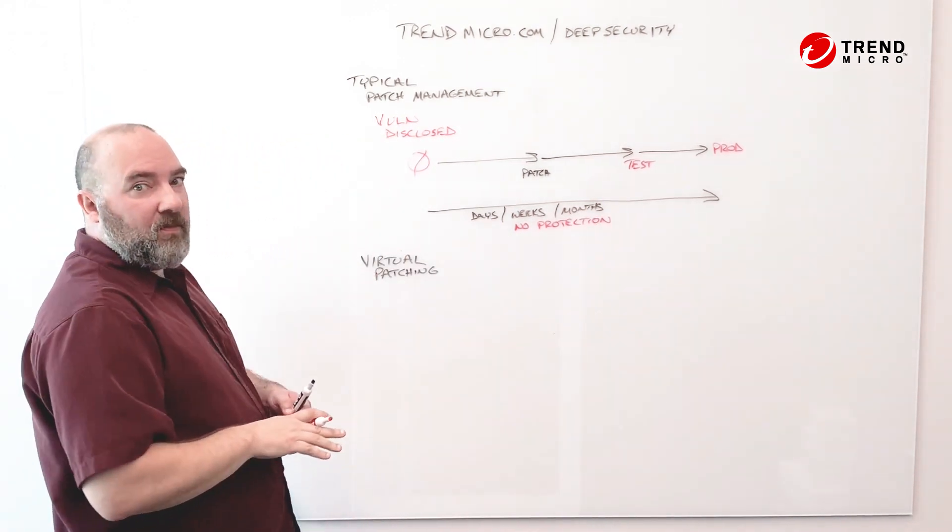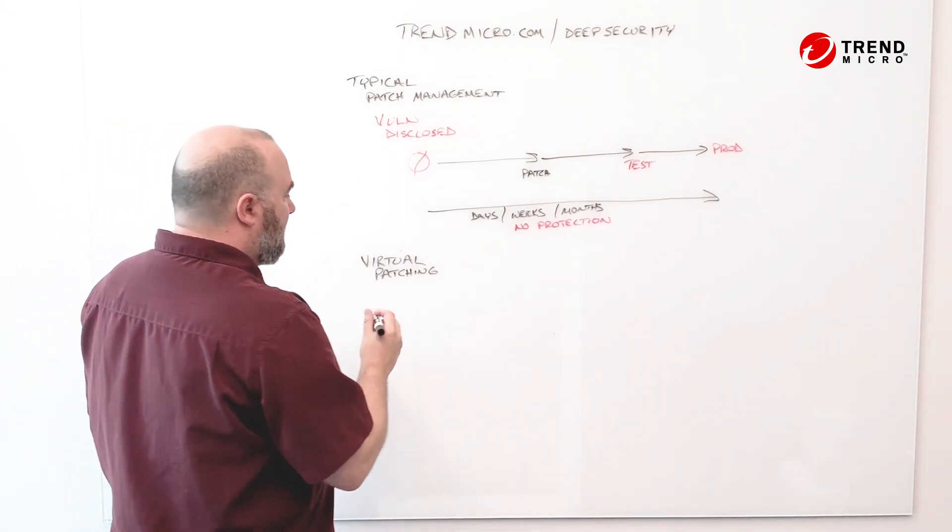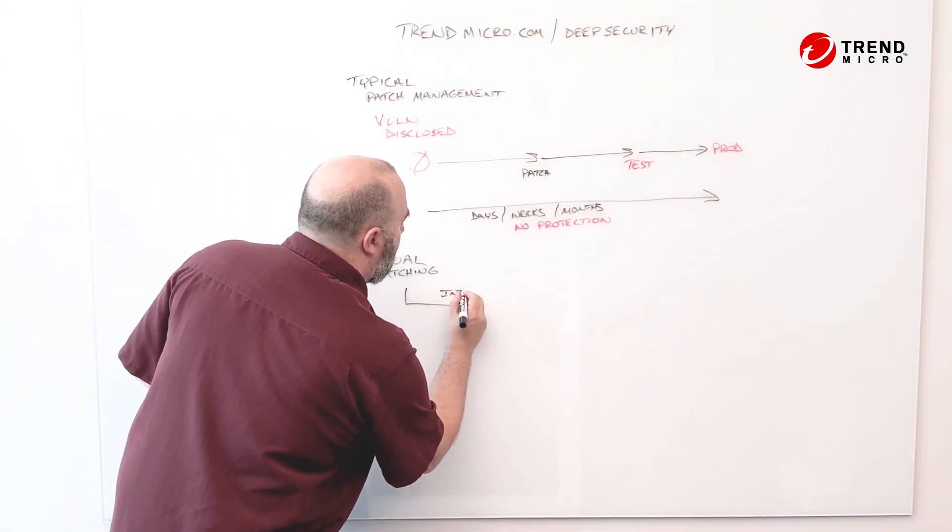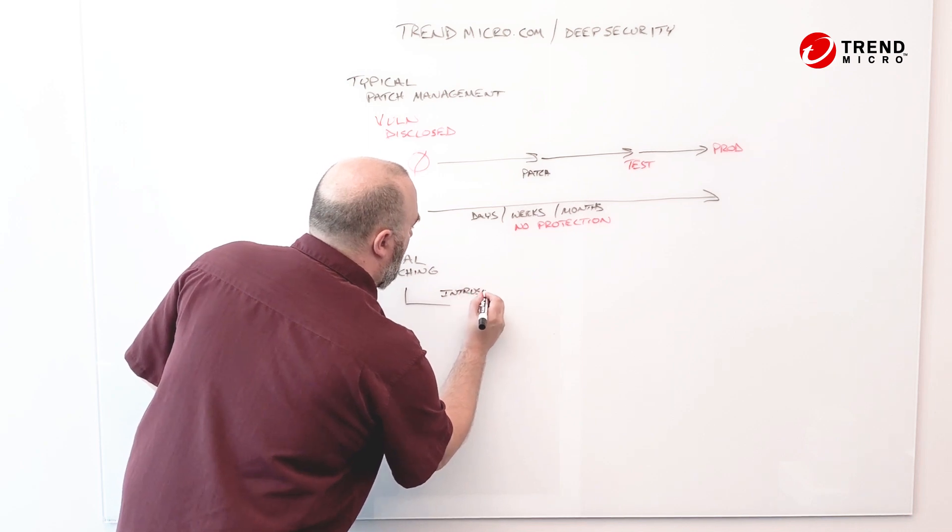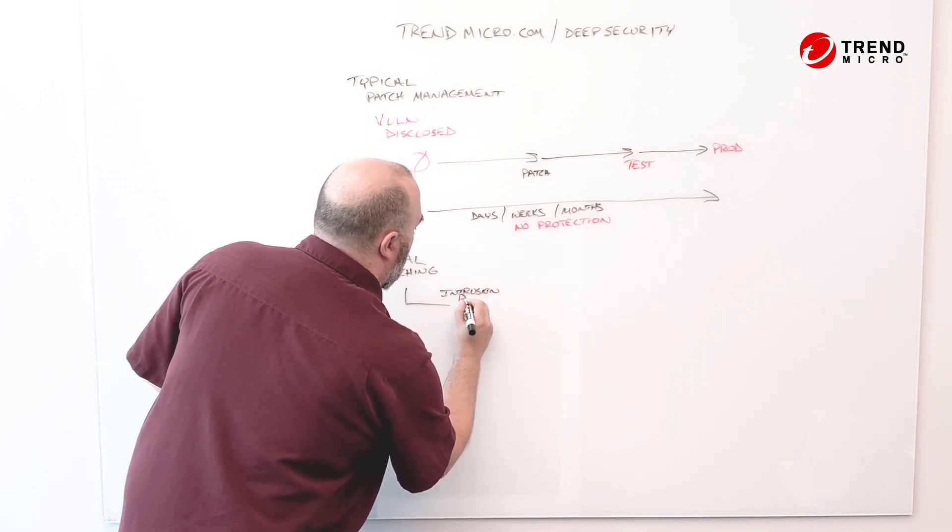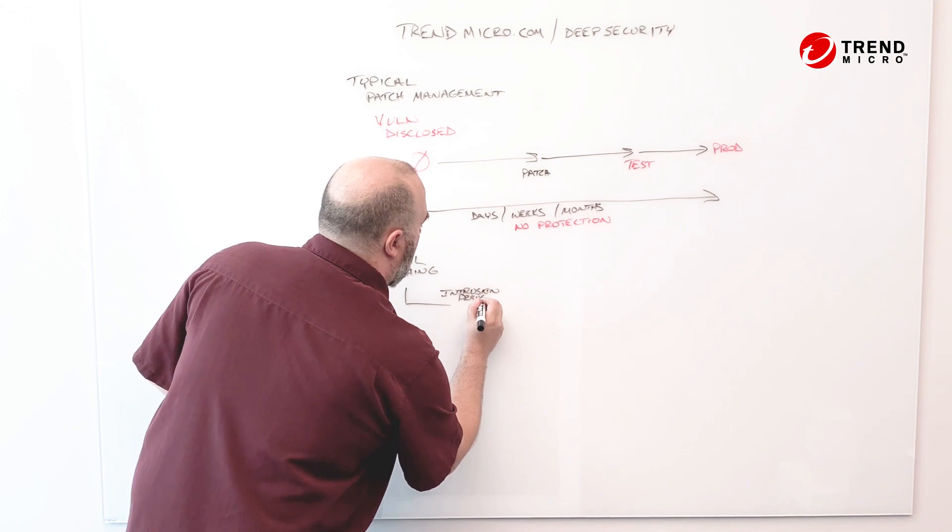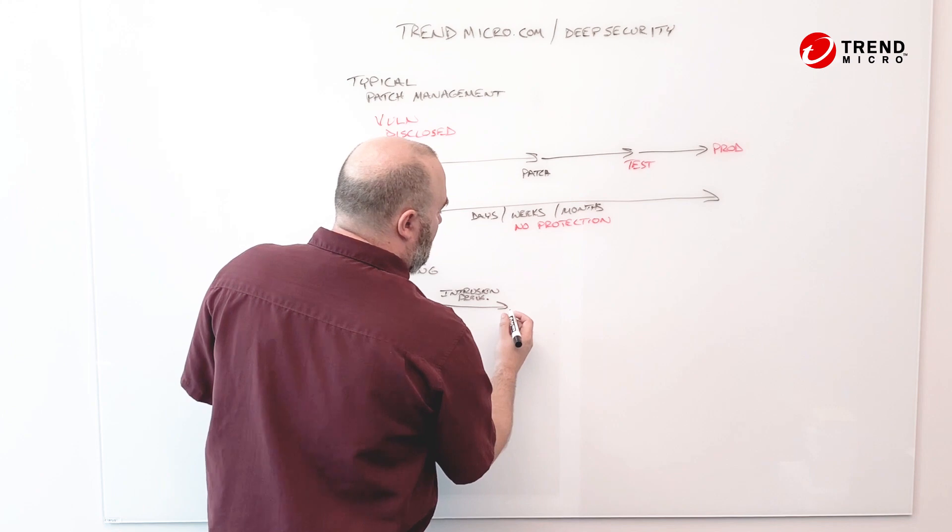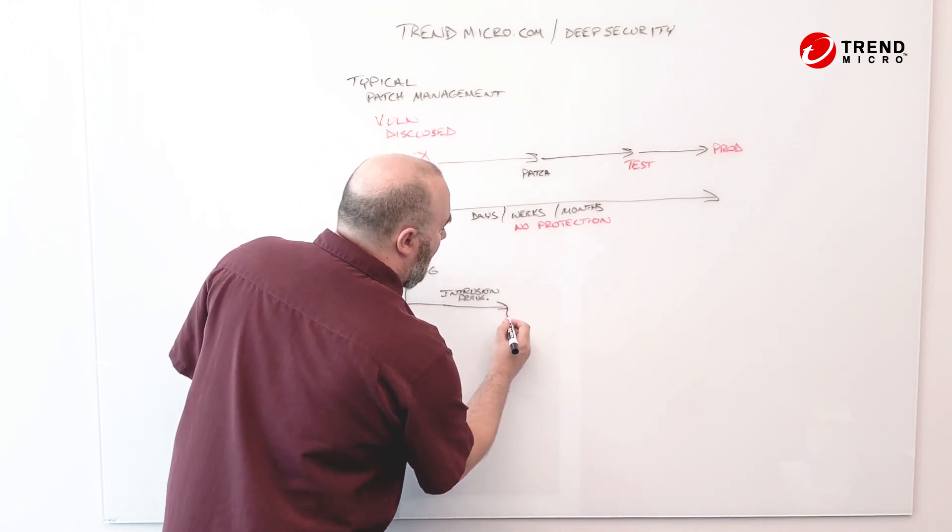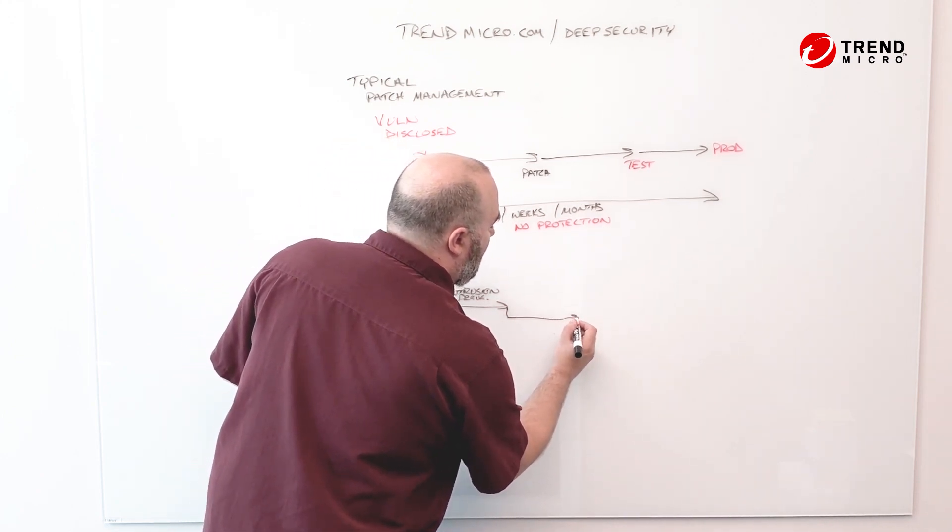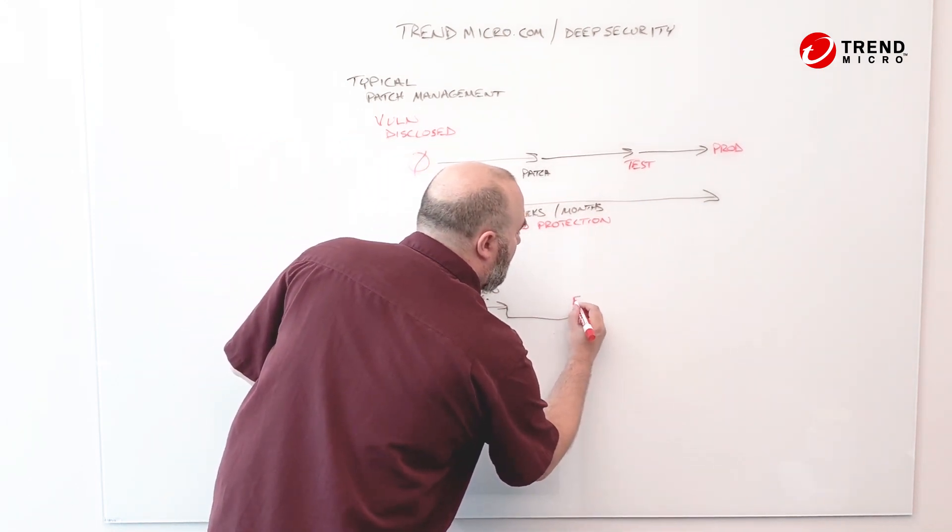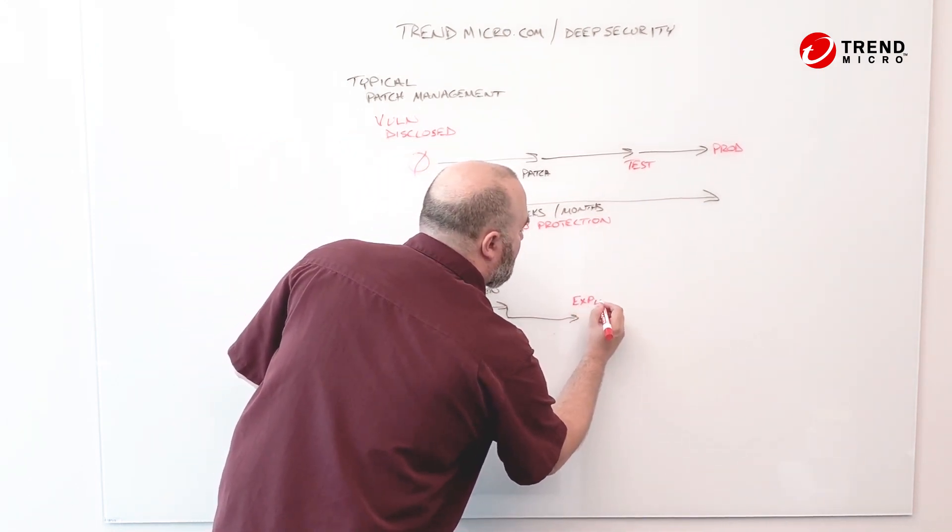So what does virtual patching do? Virtual patching uses intrusion prevention to actually apply a patch virtually to the machine. This means that we will actually inspect the traffic going into the box and look to see if that vulnerability is attempting to be exploited.